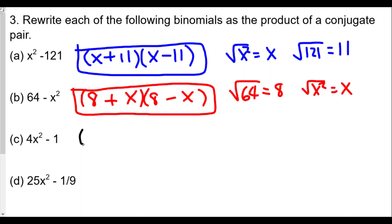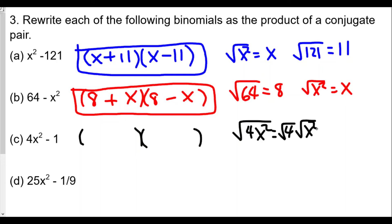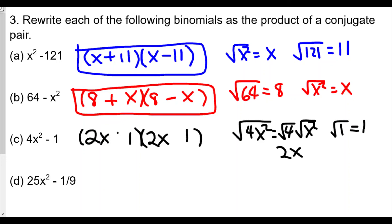For part (c), with 4x² − 1: √(4x²) = √4 · √(x²) = 2 · x = 2x, and √1 = 1. So the conjugate pair is (2x + 1)(2x − 1).